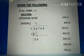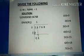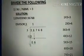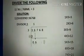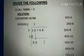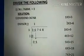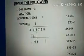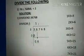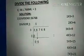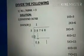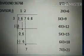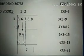Next, bring down the second digit. How many times does 3 go into 6? Check the 3 times table. Very good — 2 threes are 6. So we write 2 in the quotient and 6 below the 6.